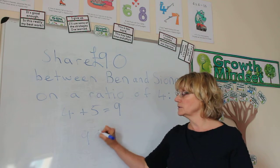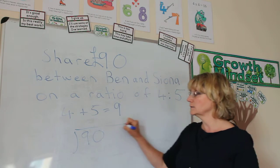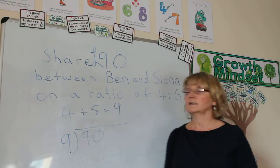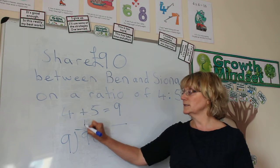So, we're going to do 90 divided by 9. And 90 divided by 9 is 10.